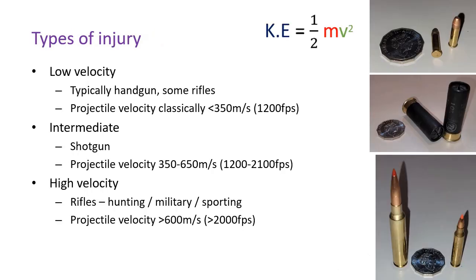Injuries have been classically classified by the velocity of the projectile, due to the exponential association between velocity and energy. However, this does oversimplify the matter as heavier or differently constructed projectiles can compensate for a slower speed and cause similarly large tissue destruction. The greatest area of difference is the ability for higher velocity injuries to cause tissue stretch and destruction further away from their path through a temporary wound cavity, and the way some projectiles fragment and cause harm further from their original tract.